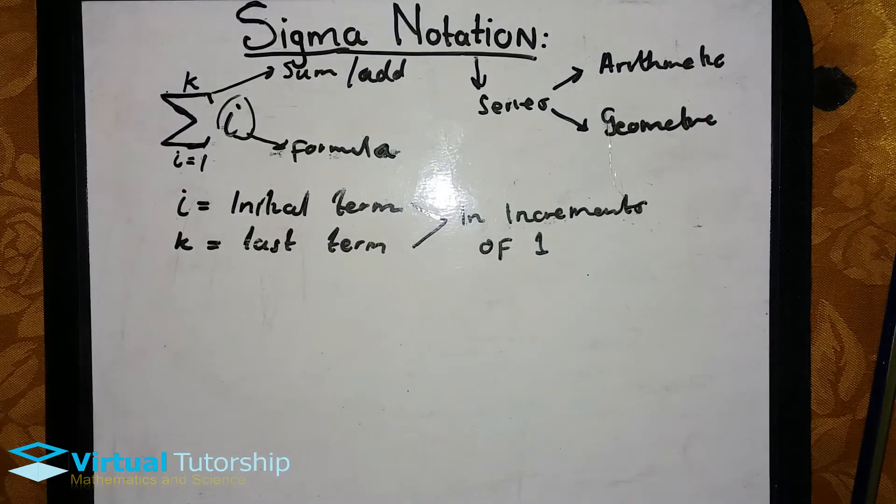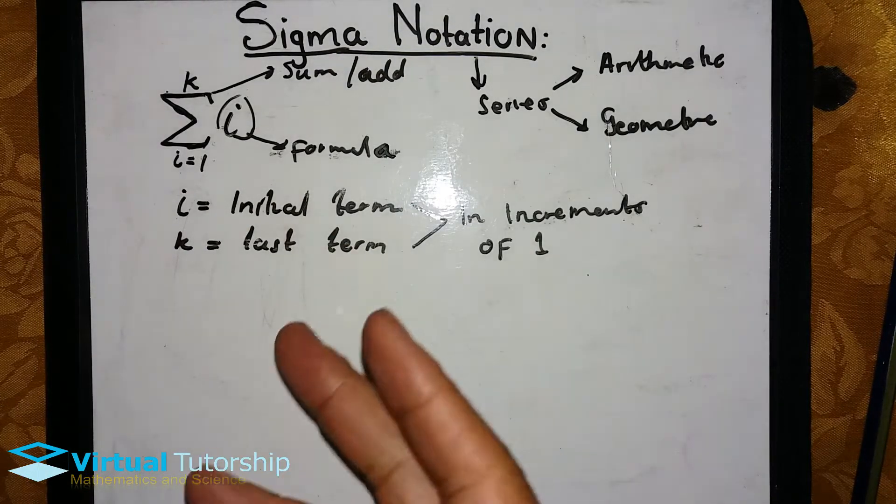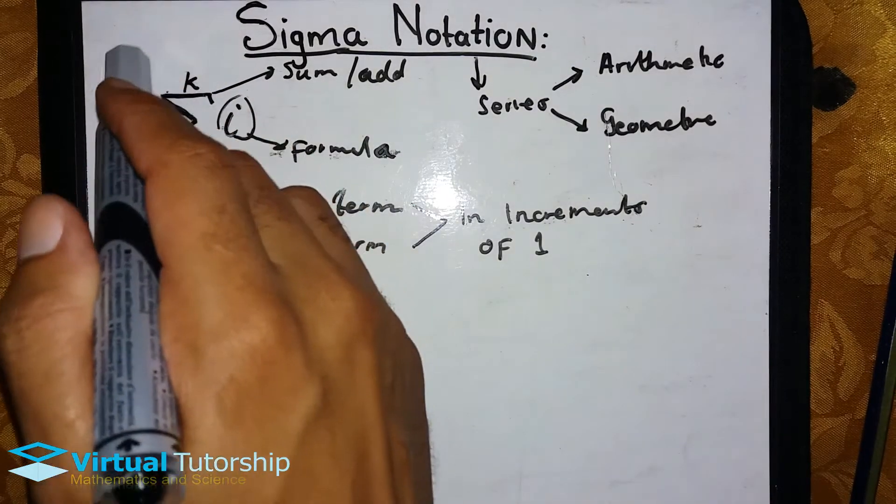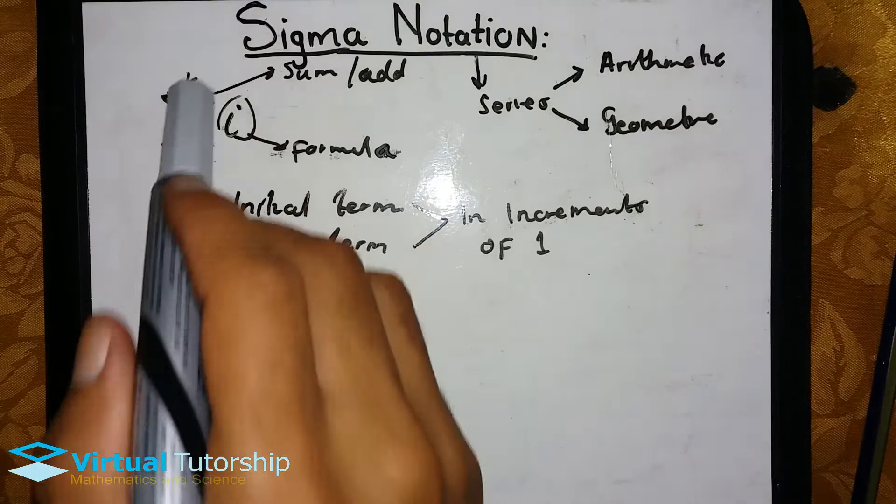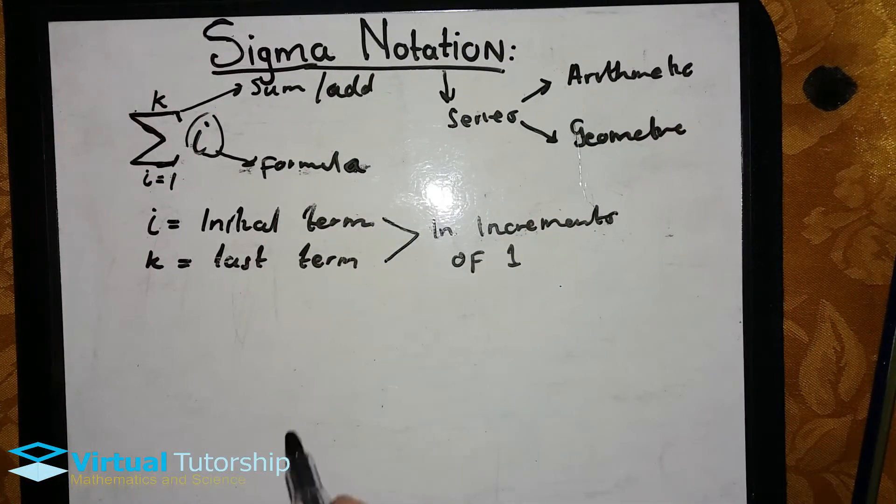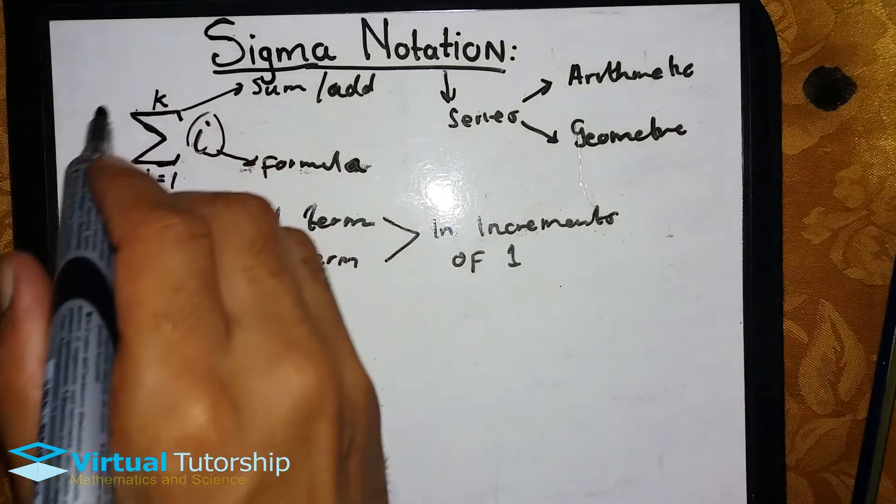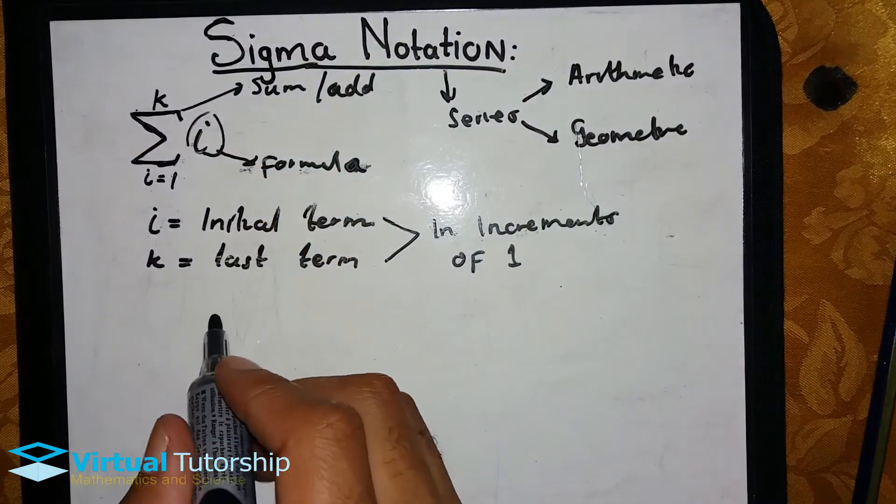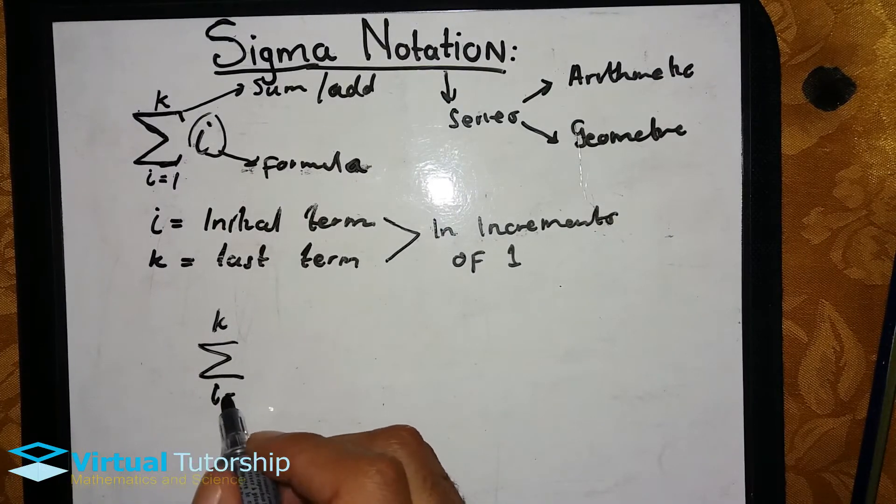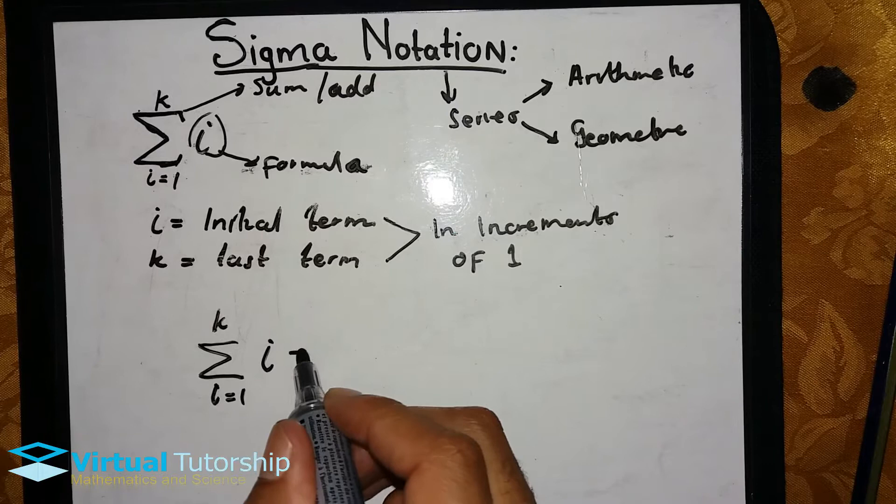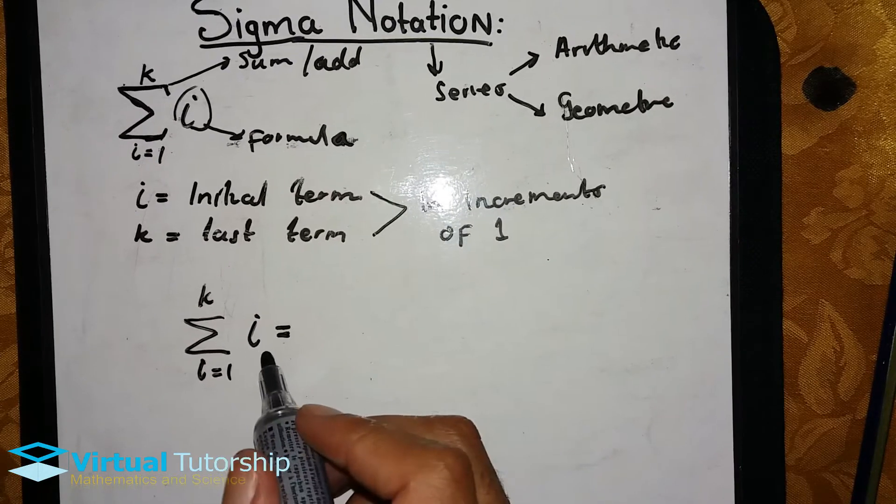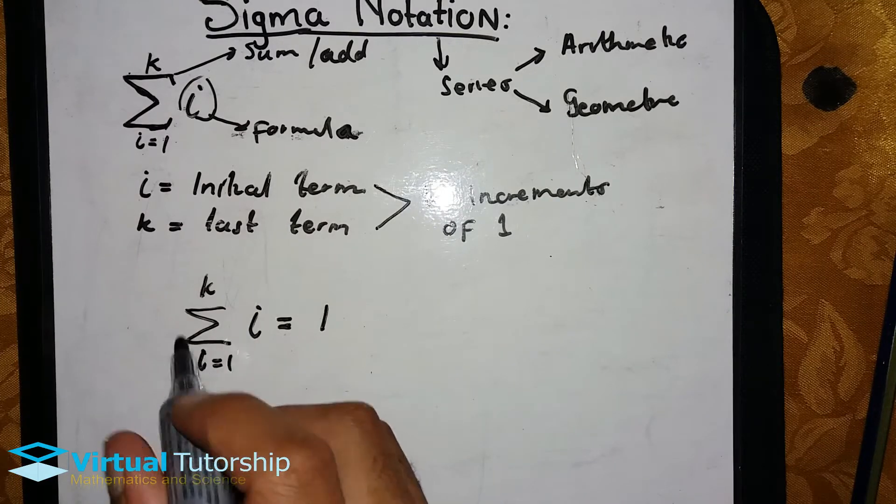Now we substitute in the formula. When you substitute, in increments of one: it's one, the next substitution is two, then three, then four, then five, then six, all the way up until you reach k. Let's look at an example of this Sigma notation.